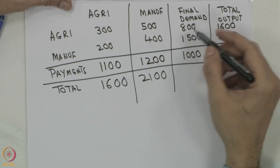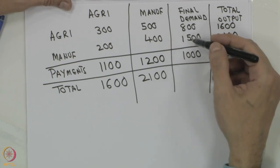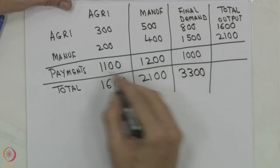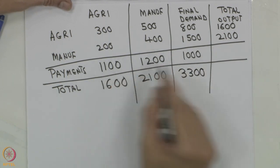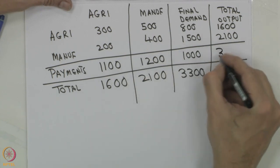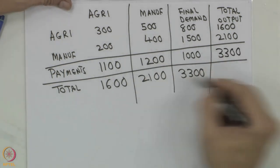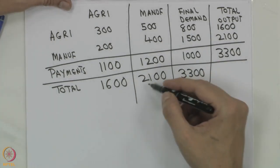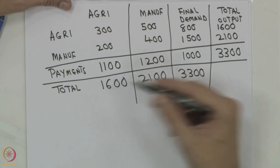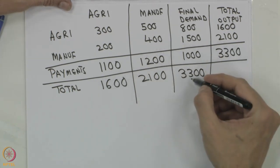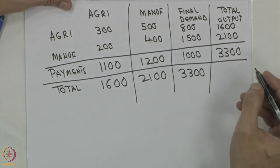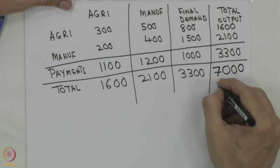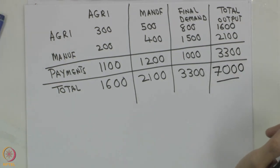Then when we add this up: 2300 plus 1000 equals 3300. Now these two have to add up: 2100 plus 1600 equals 3700, and 3700 plus 3300 equals 7000. So 7000 million rupees is the total output of the economy.